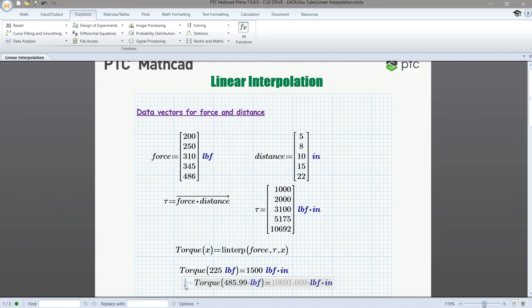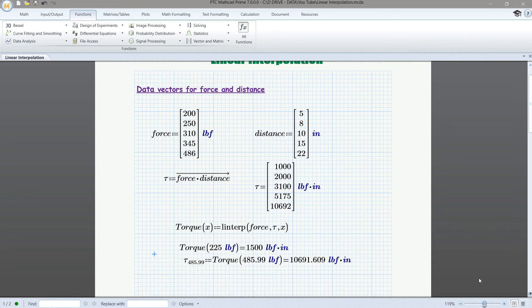So we'll just go ahead and assign it to a variable and we'll call it tau and then a subscript. And then we can just say, in this particular case, 485.99. And so that's our variable. And here we'll scroll down just to give ourselves a little bit more space. We can copy that, we can paste it, and then we can display it on its own. And then we can use it in any calculation. So that is how we do linear interpolation in Mathcad.